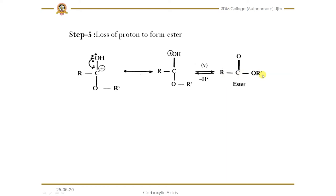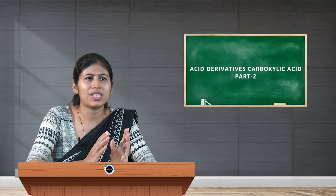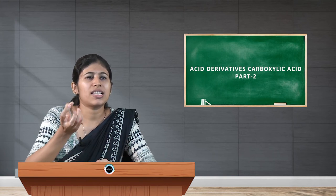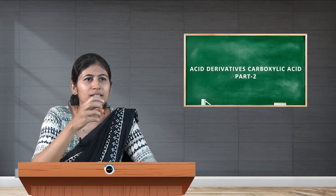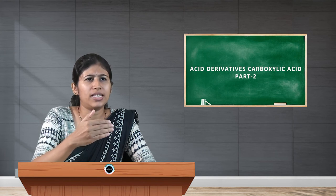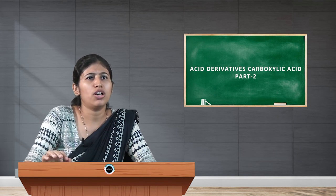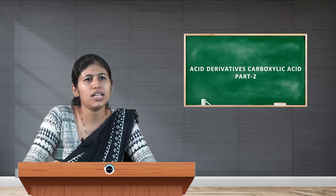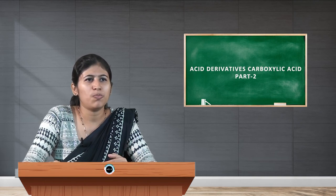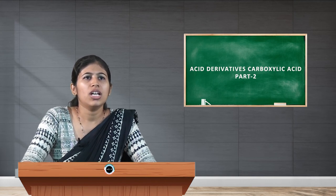To summarize the esterification mechanism: the carboxylic acid first accepts a proton from the acid catalyst, then the alcohol (nucleophile) attacks the carbonyl carbon, followed by removal of water, and finally removal of a proton from the protonated ester. These are the main important steps for the mechanism. Now we will see ester hydrolysis.